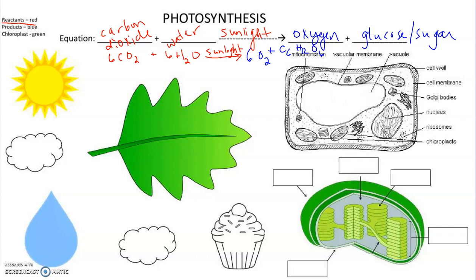Whenever we talk about photosynthesis, this is something that's going to be happening in a plant, or in something that is an autotroph. So we have our leaf, which is going to be an autotroph, meaning that it makes its own food.